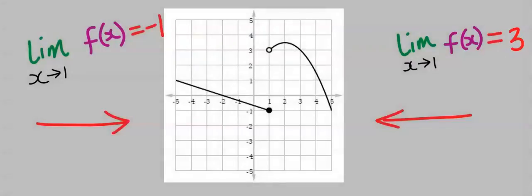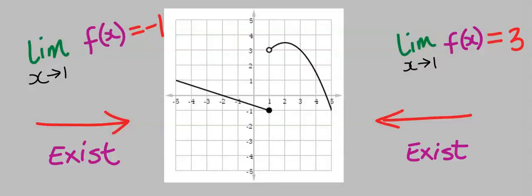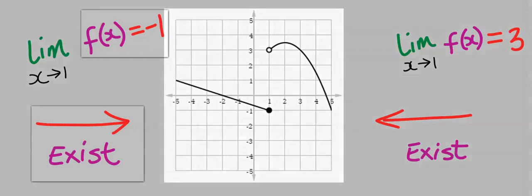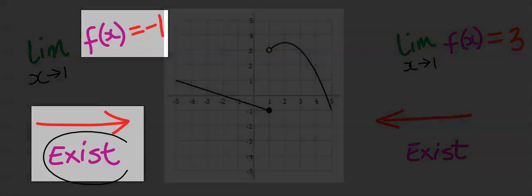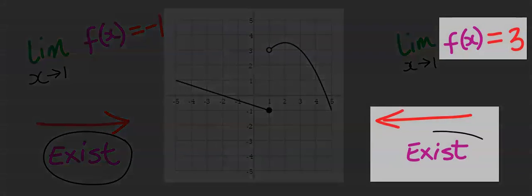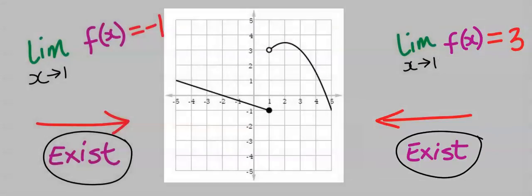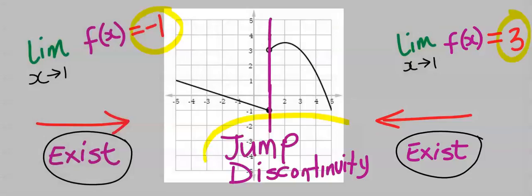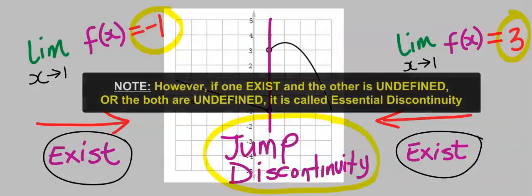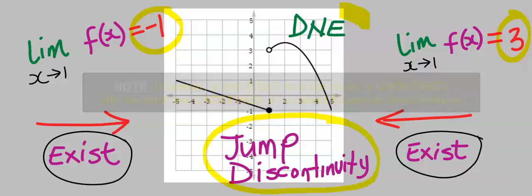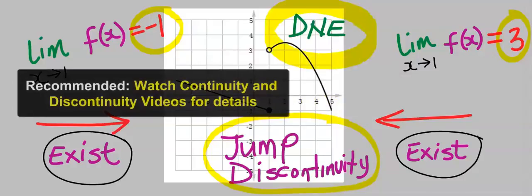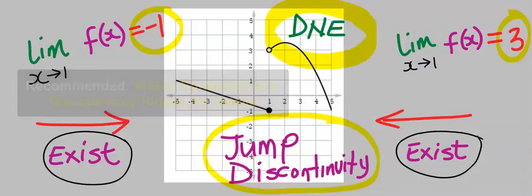This is the analysis of this graph. We don't know the function, but we can predict its behavior. In conclusion, the left-hand limit exists and the right-hand limit exists. However, their answers are not the same. This is called jump discontinuity. And we can say this limit does not exist. We obtained all our information from the graph.